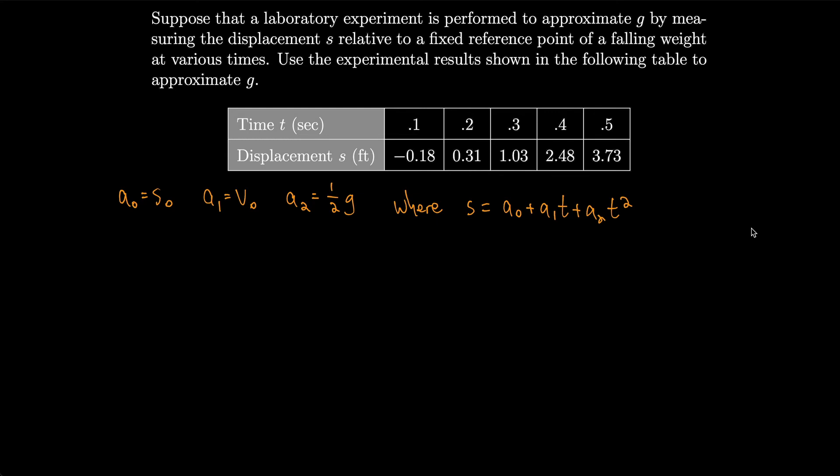All right, so we'll need to solve these coefficients a0, a1, and a2. So we have a bunch of points, let's look at those. We have (0.1, -0.18), (0.2, 0.31), (0.3, 1.03), (0.4, 2.48), and (0.5, 3.73). So now we can build a matrix M. It'll be very similar to before, we'll just have a bunch of 1s. We have 5 points, so we need 5 ones. So 1, 2, 3, 4, 5.